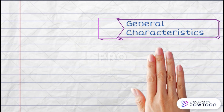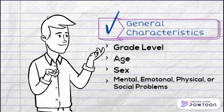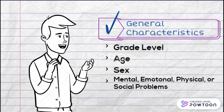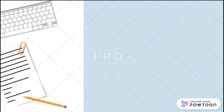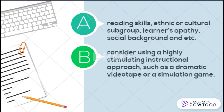The first is the characteristics of the learners. These general characteristics refer to the grade level, age, sex, mental, emotional, physical, or social problems, or even socioeconomic status. Characteristics of learners also depend on reading skills, their ethnic and cultural subgroup, the learner's attitudes, social background, and so on. If a learner's attitude towards the subject matter is a problem, consider using a highly stimulating instructional approach such as a dramatic videotape or a simulation game.